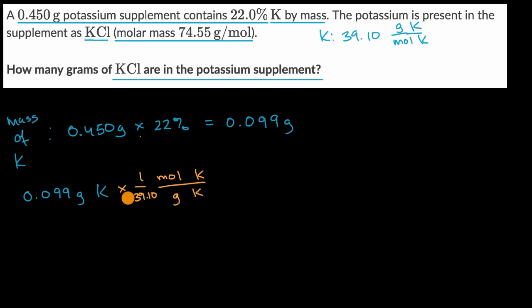So this calculation will tell me moles of potassium. Now, I have exactly one potassium atom for every potassium chloride molecule, and so whatever this number is, I'm going to have the same number of moles of potassium chloride.